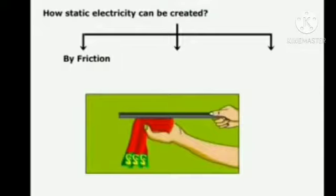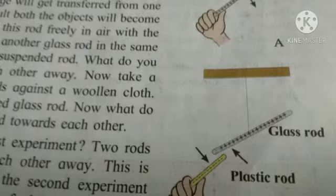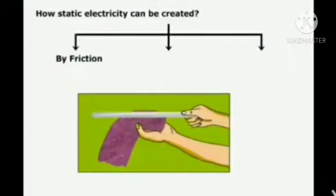Let's do an activity. Rub one end of a glass rod against a silk cloth. Due to the rubbing, a small charge will get transferred from one object to the other; as a result, both objects will become somewhat charged. Suspend this rod freely in air with the help of a thread. Now charge another glass rod in the same manner and bring it near the suspended rod.